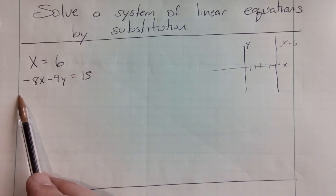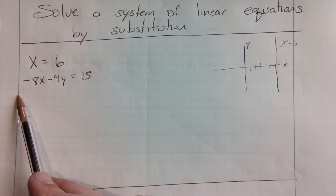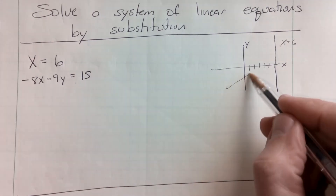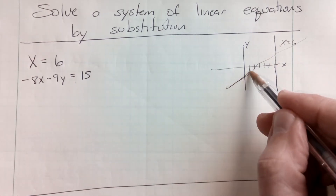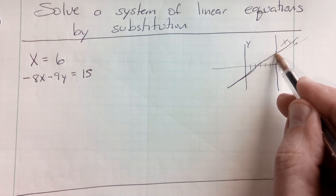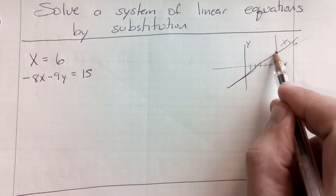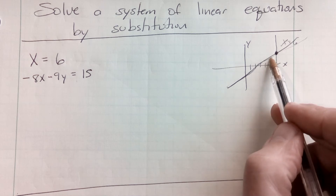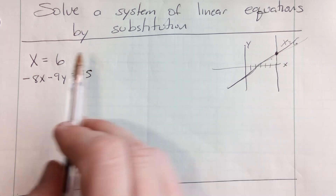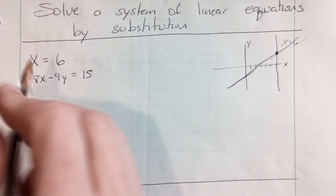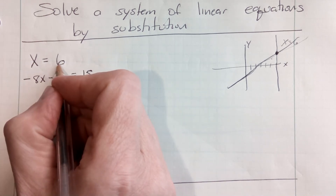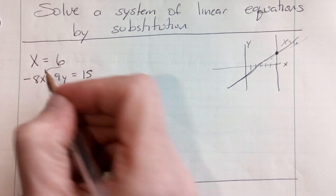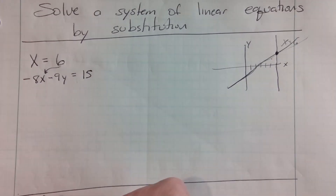I'm not sure exactly where the y-intercept would be — I don't even think it has a nice y-intercept. It's going to be some straight line that intersects somewhere. I want to find where that intersects. The easiest way is to realize that wherever they intersect, it's got to have an x value of 6. So that means I can substitute this 6 into that x.